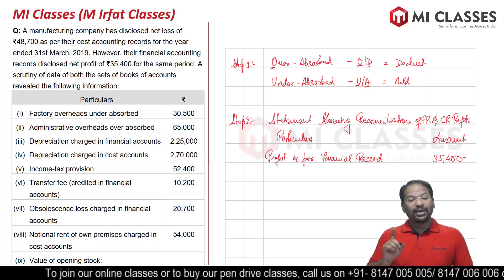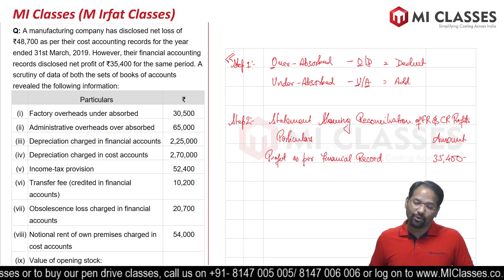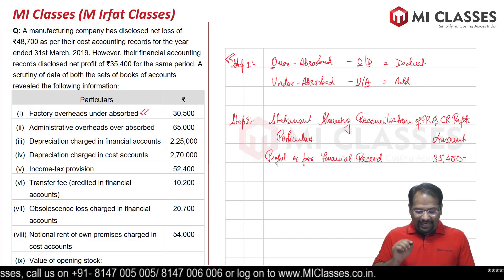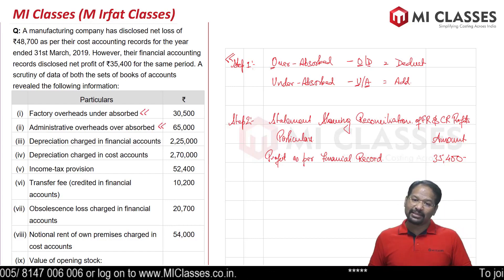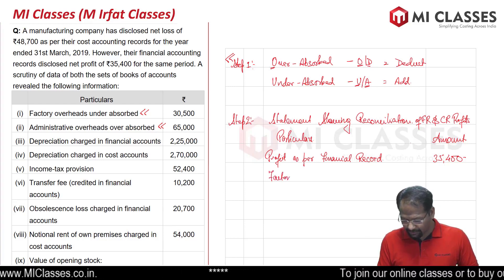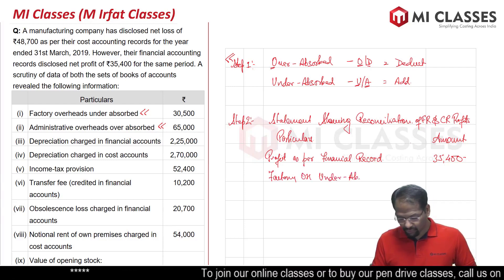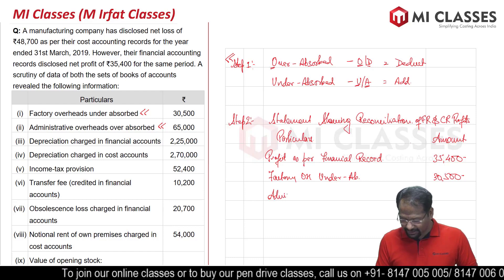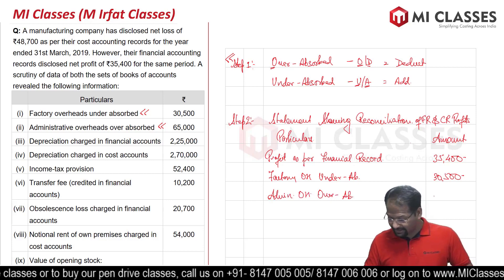After writing the opening profit, we search for under absorbed and over absorbed details. Factory overheads are under absorbed — 30,500. Administrative overheads are over absorbed — 65,000. We write them down first, and then we will apply the addition or subtraction signs based on step one.